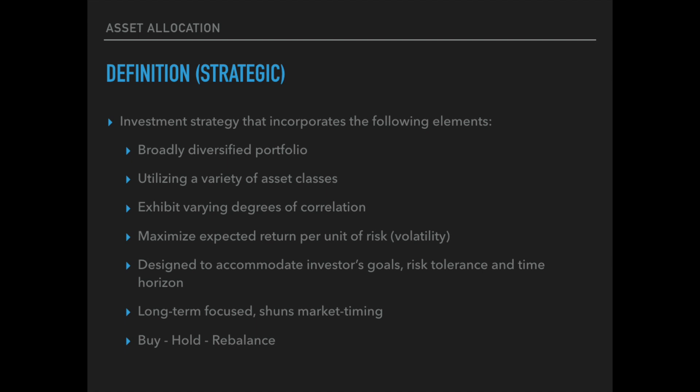Strategic asset allocation is also designed to maximize expected portfolio return per unit of risk, also referred to as volatility. It's designed to accommodate an investor's goals, risk tolerance, and time horizon. Strategic asset allocation is often long-term focused, and it shuns market timing. It's a buy, hold, and then rebalance strategy.